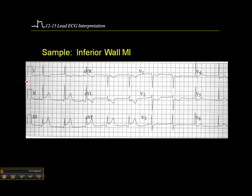Leads 2, 3, and AVF are anatomically contiguous, and they reflect what's happening in the inferior wall of the left ventricle. The inferior wall of the left ventricle is fed by the RCA in most humans.